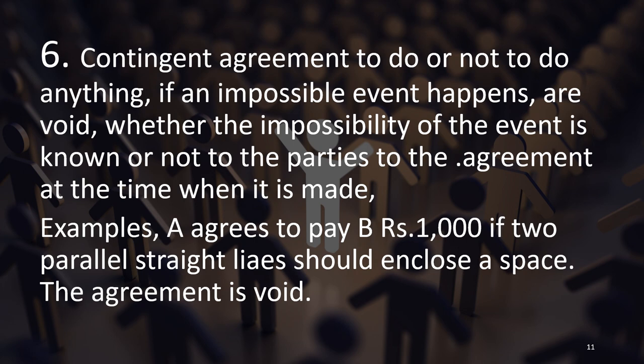A contingent agreement to do or not to do anything based on an impossible event is void — whether or not the impossibility is known to the parties at the time the agreement is made. This is because a contingent contract requires both possibilities: the event can or cannot happen, with neither party having control. If it is impossible, only one outcome is certain — it will not happen — so it cannot be called a contingent contract at all. Such an agreement is void.